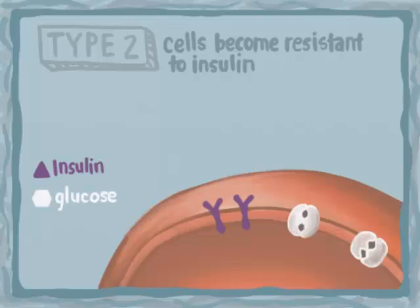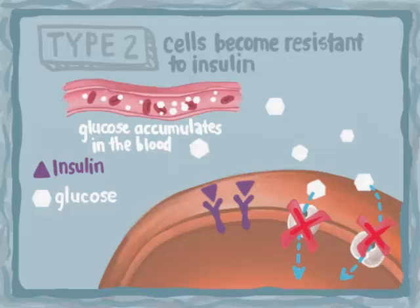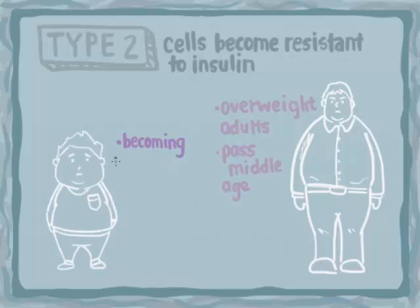In type 2 diabetes, cells become resistant to insulin. In other words, insulin can no longer open the gate for glucose to enter the cell, so glucose levels build in the bloodstream. Type 2 is most common among overweight adults above middle age. However, with increasing obesity in children, type 2 is becoming more common among children and teenagers as well.